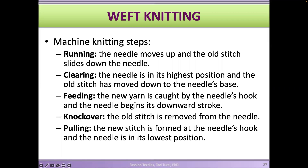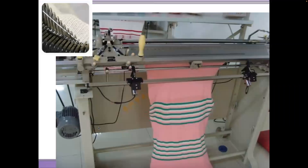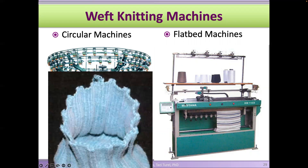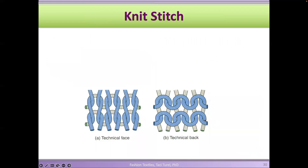The video showed how the running, clearing, feeding, knockover, and pulling steps work when making loops on a knitting machine. Each needle goes through each of those steps one by one. On circular knitting machines, needles are placed in a circular space; on a flat bed, the needles are all side by side. With a circular machine you can create fabrics like a cuff. On the technical face of a jersey fabric you see the V's on the surface — the crowns are hidden in the back. On the back of the fabric, you see the top of the crowns — the half circles.